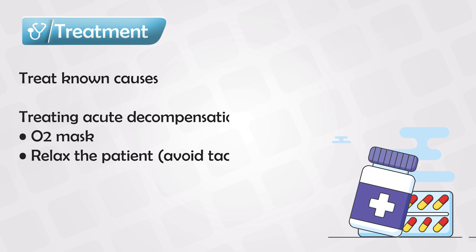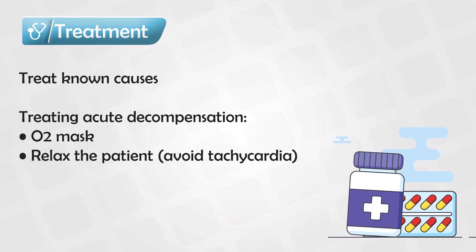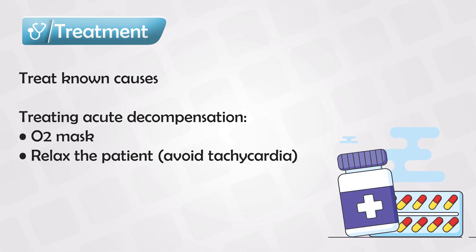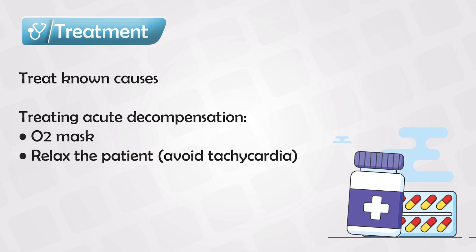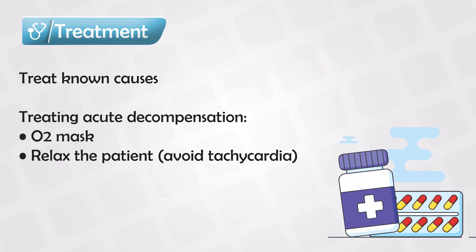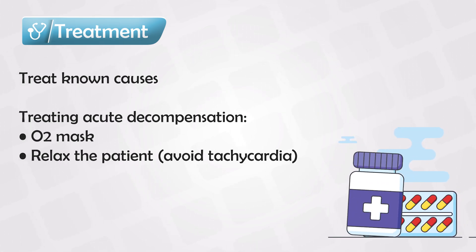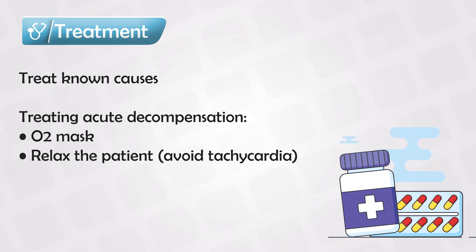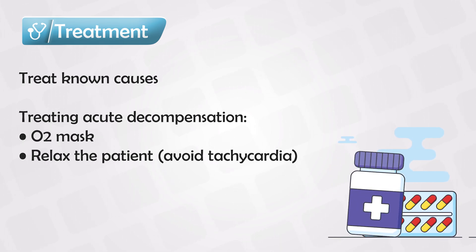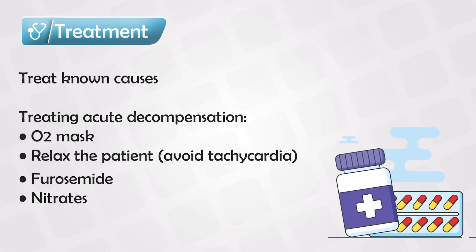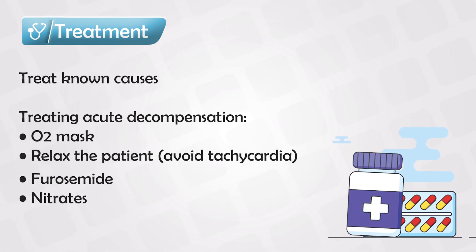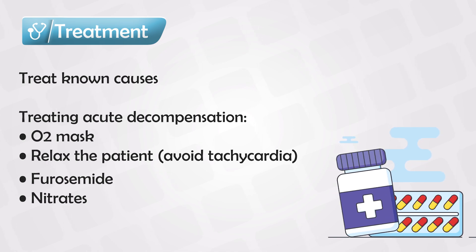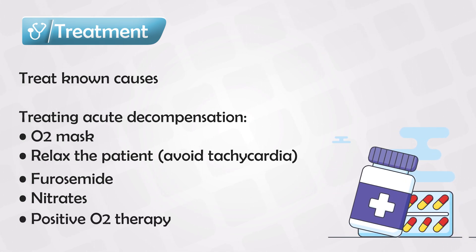But for most cases, the cause is unknown. To treat an acute decompensation, where you need to immediately restore the circulation, you give the patient oxygen, make them as relaxed as possible, and you can use some diuretics like furosemide, or vasodilators like nitrates, and sometimes you can use a positive oxygen therapy.